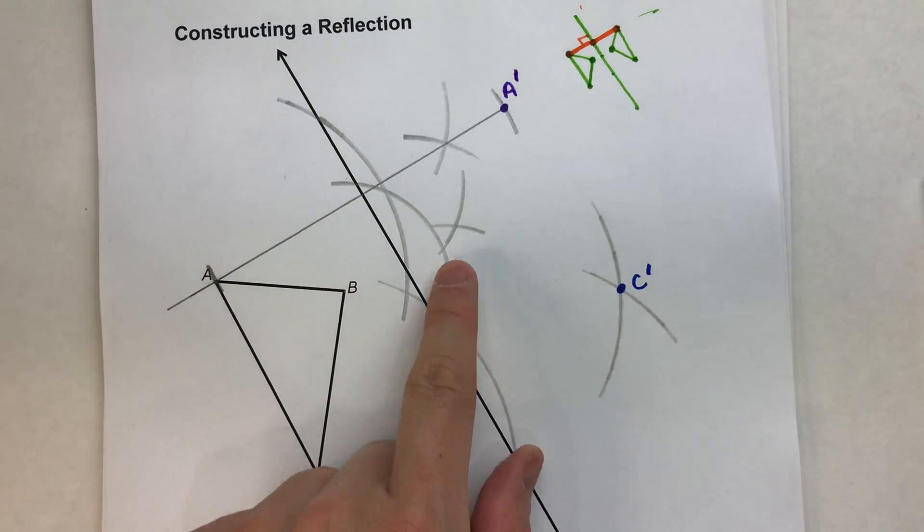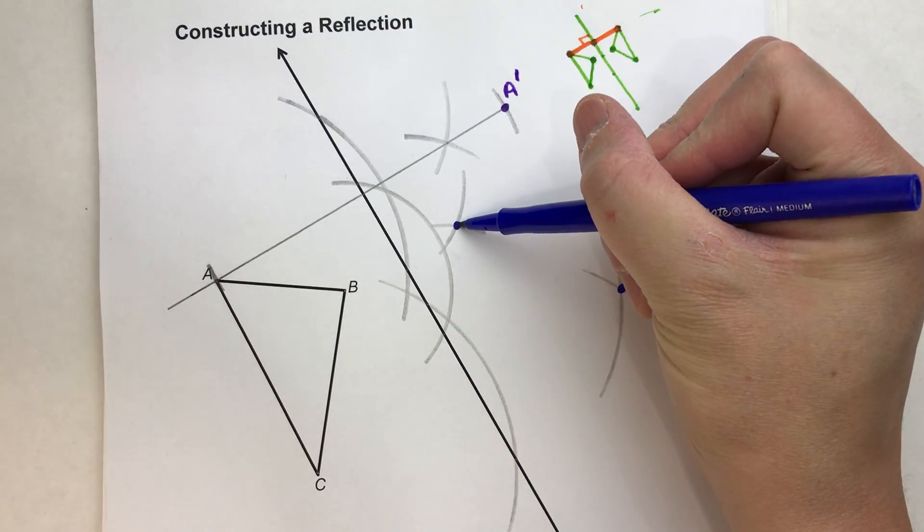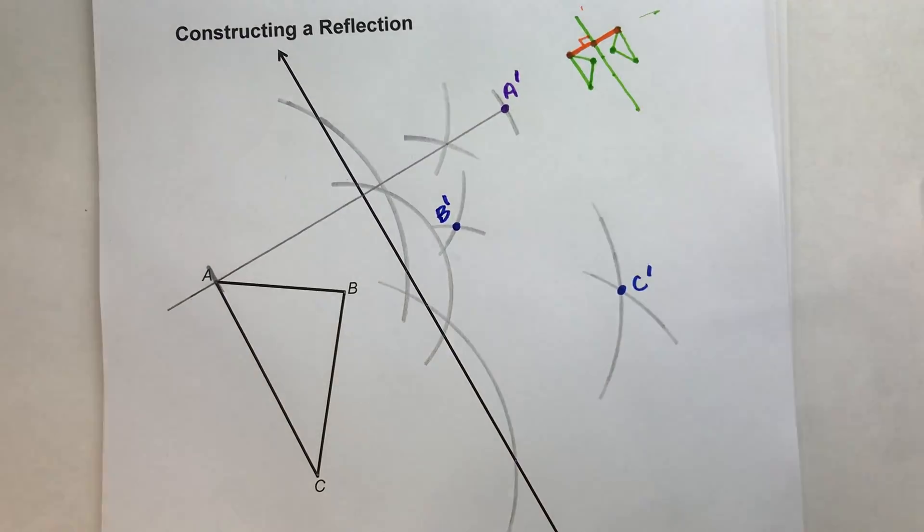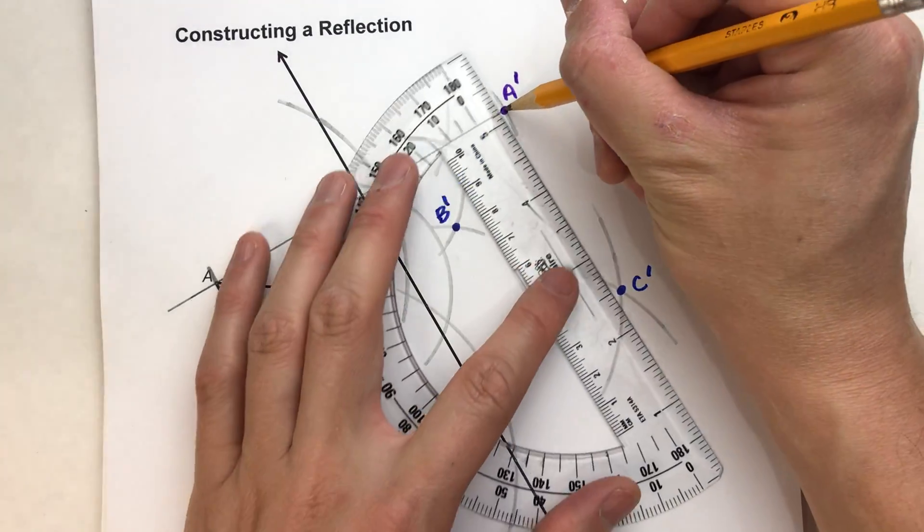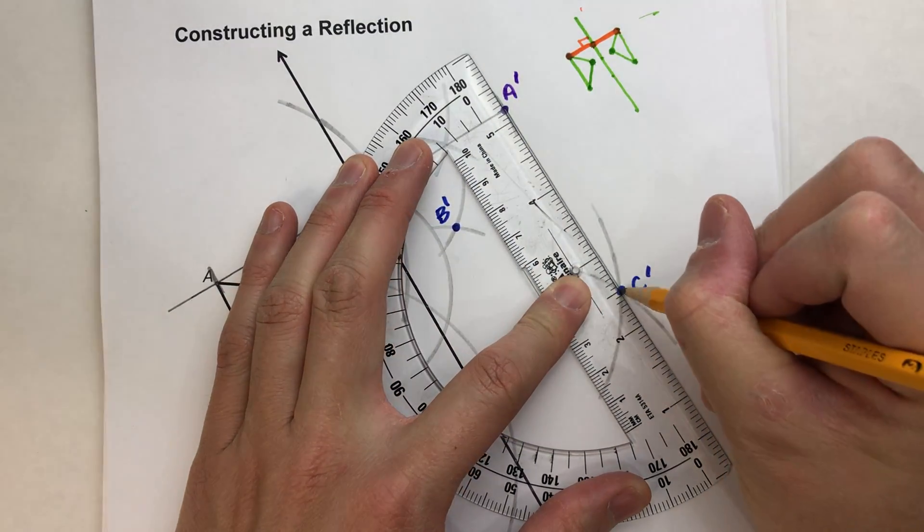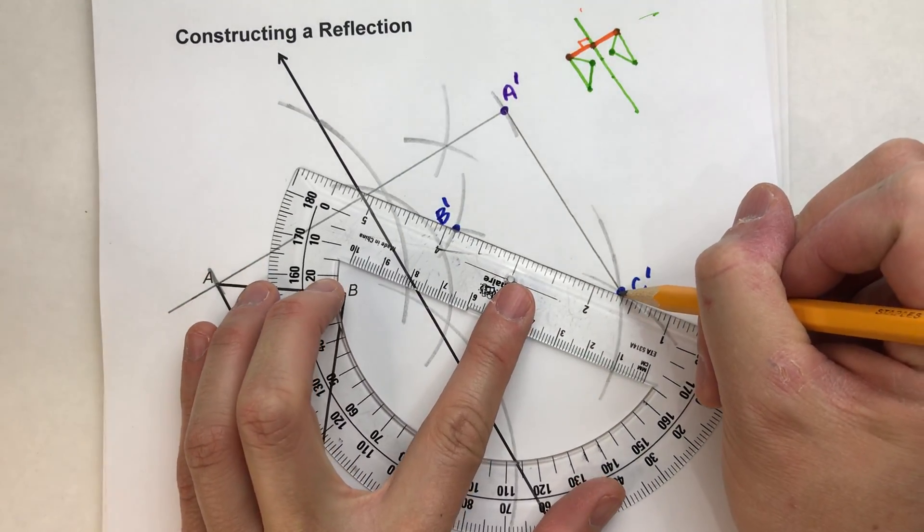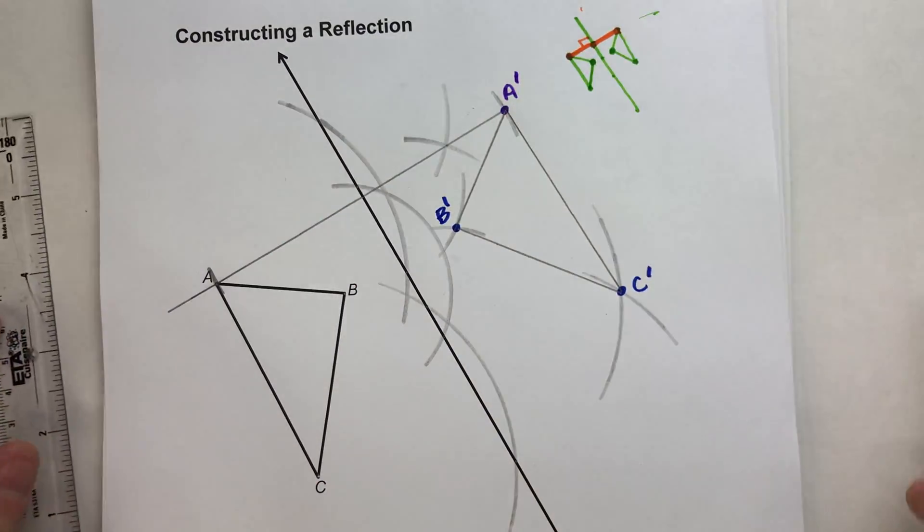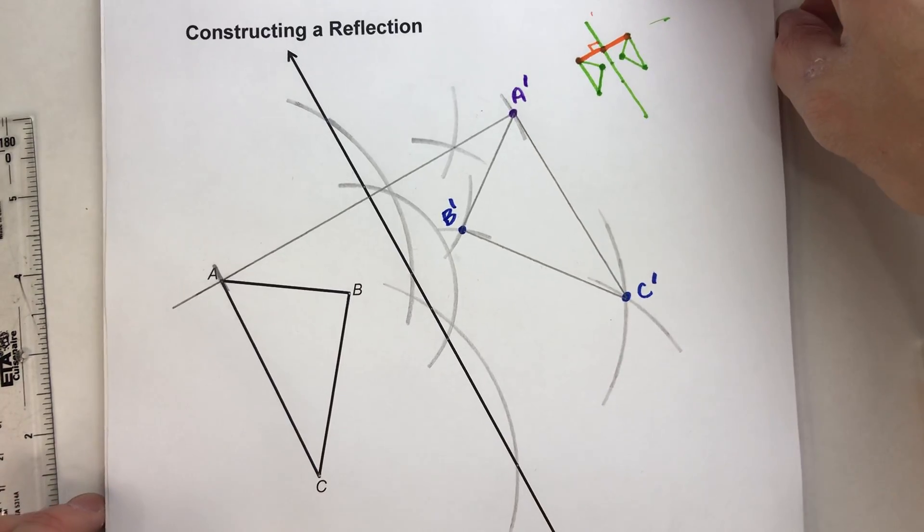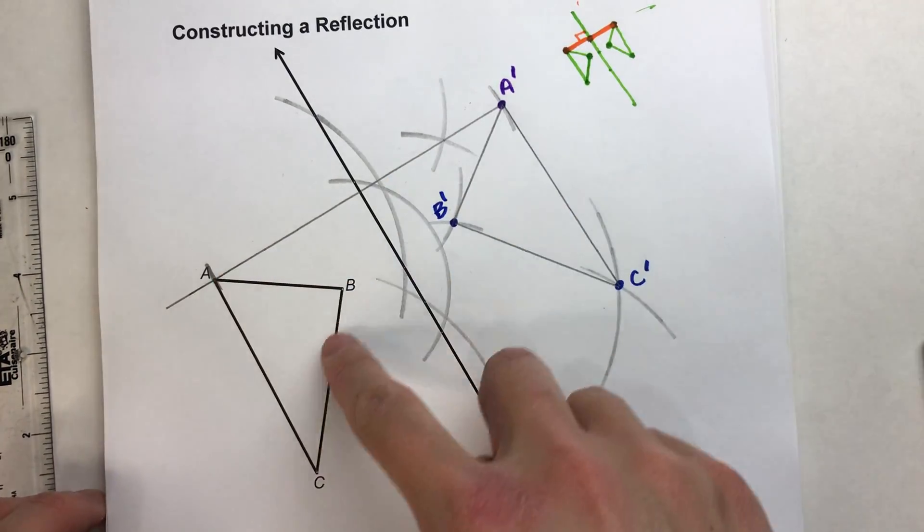And guess what? I just found my B prime where those two arcs intersect. B prime. So now I've got all three vertices of my triangle. Connect them up. And there is my reflected triangle.